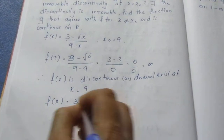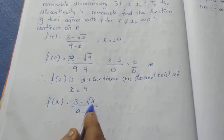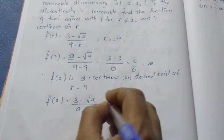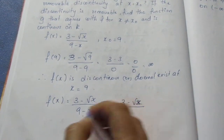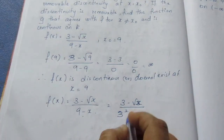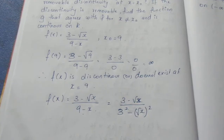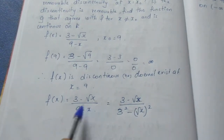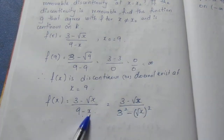Now let us simplify (3 minus root x) by (9 minus x). Here 3 minus root x is in the numerator. The denominator 9 minus x can be written as 3 squared minus root x whole squared, which is a difference of squares. So 3 squared gives 9, and root x whole squared gives x, and the square and root cancel leaving x.